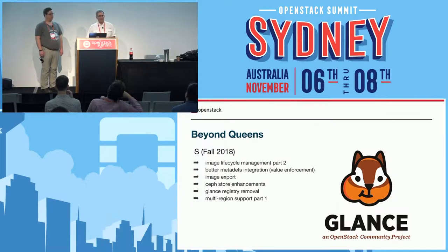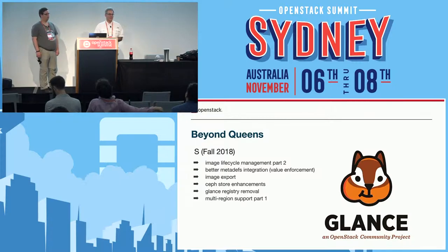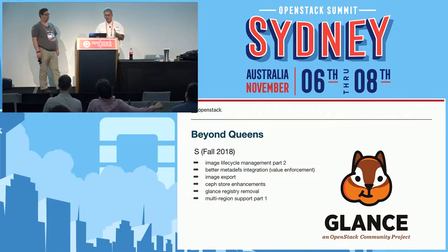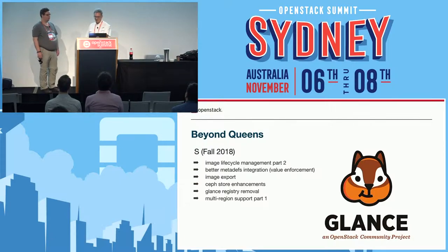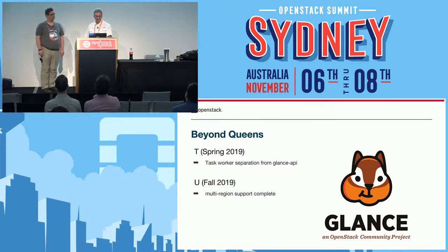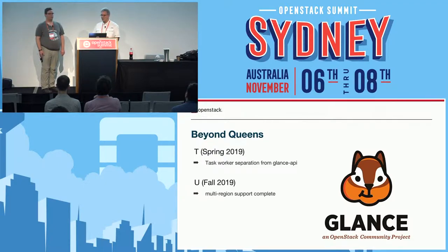We finally want to remove the Glance registry. The Glance registry is a service that end users never see — it's optional in v2 but required for v1, and it mediates interactions with the database. It's really not necessary anymore, so we want to get it out. We also want multi-region support part one in S, and then in T, task worker separation from the Glance API to make it more stable and scalable. Complete multi-region support would come in the U release.